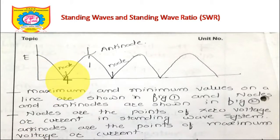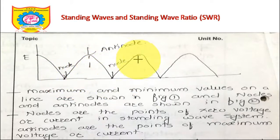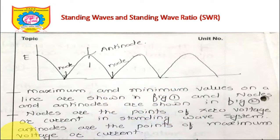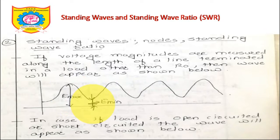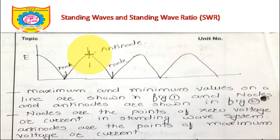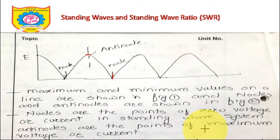If the load is open-circuited or short-circuited, the voltage pattern shows the open circuit voltage at maximum, then decreasing to zero, then back to maxima and minima. Maximum and minimum values are shown in figure one, and nodes and anti-nodes are shown in figure two. Nodes are the points of zero voltage and anti-nodes are the points of maximum voltage or current.